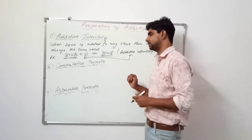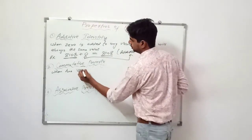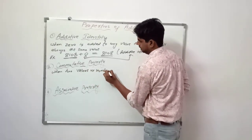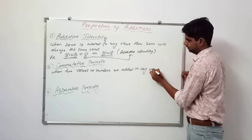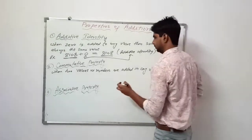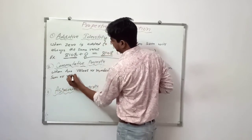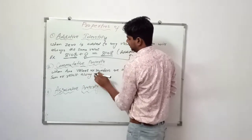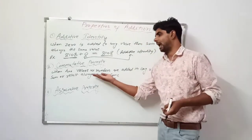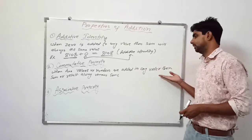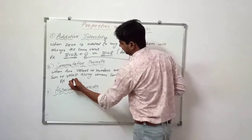The Commutative Property says: when two values or numbers are added in any order, the sum or result always remains the same. What it means is, whenever we are adding numbers in any order or in any sequence, the sum will always remain the same.